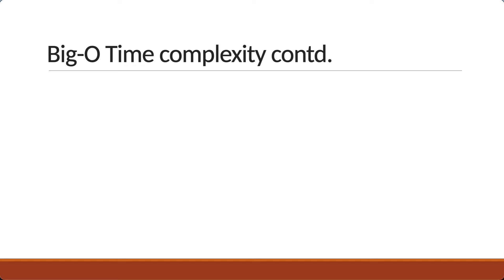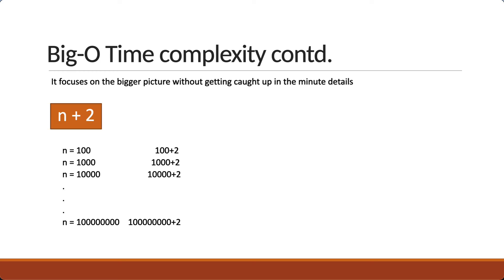The second point is that Big-O focuses on the bigger picture without getting caught up in the minute details. Let's plug in a few values to n and understand this point. If n equals 100, n plus 2 is 100 plus 2. Similarly, we have 1000 plus 2, 10,000 plus 2, and as the input grows to 100 million, it is 100 million plus 2. At that point, the plus 2 is very insignificant. We can actually drop it.